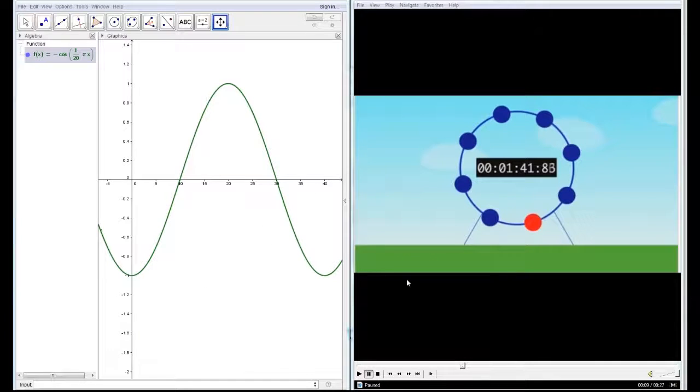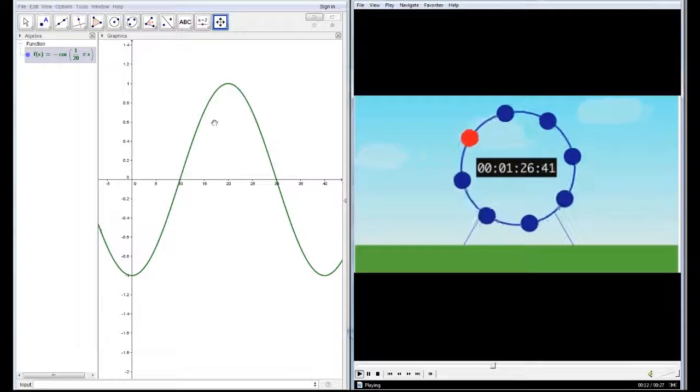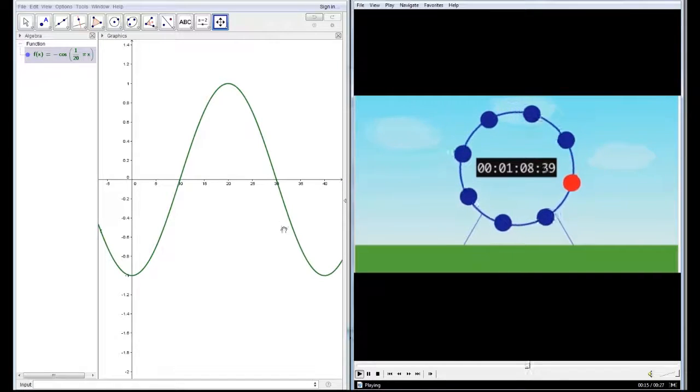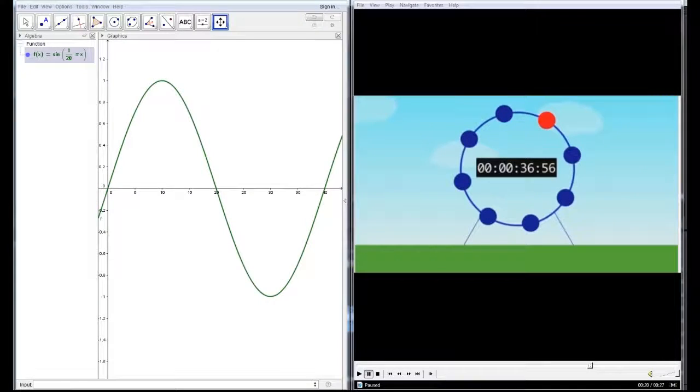And again, what I will do in this case is follow along with my cursor the height that the red car is above the midpoint, going once again from minus one to one. So three, two, one.